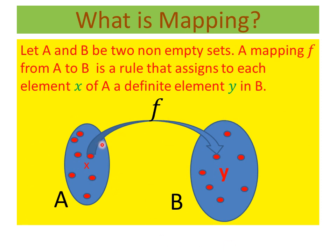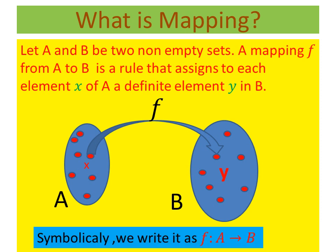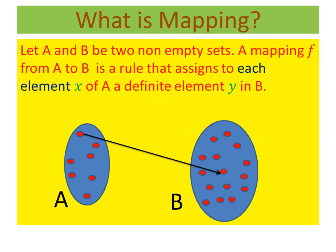Here I draw two non-empty sets A and B. F is a rule that assigns to each element of A a definite element in B. If this is possible, then we write it in the form f: A → B.